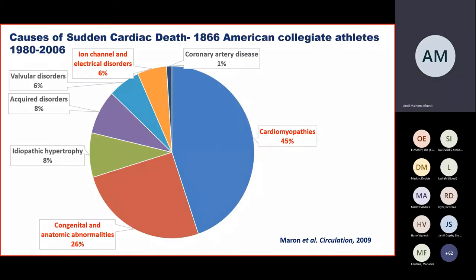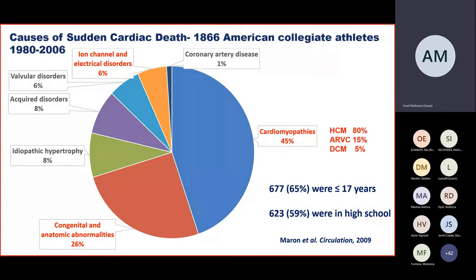We can now consider the causes of sudden cardiac death. The largest case series worldwide of sudden cardiac death amongst young athletes revealed that those aged 17 years were particularly vulnerable and that cardiomyopathies were the main component — including hypertrophic cardiomyopathy, ARVC, and dilated cardiomyopathy. These are conditions that may have been detected during life.